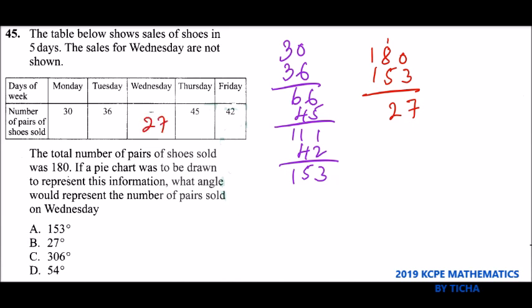In terms of the angle representation, a pie chart normally represents an angle of 360 degrees. So we say it is 27 divided by the number of shoes sold, that is 180, and you multiply by 360 degrees.